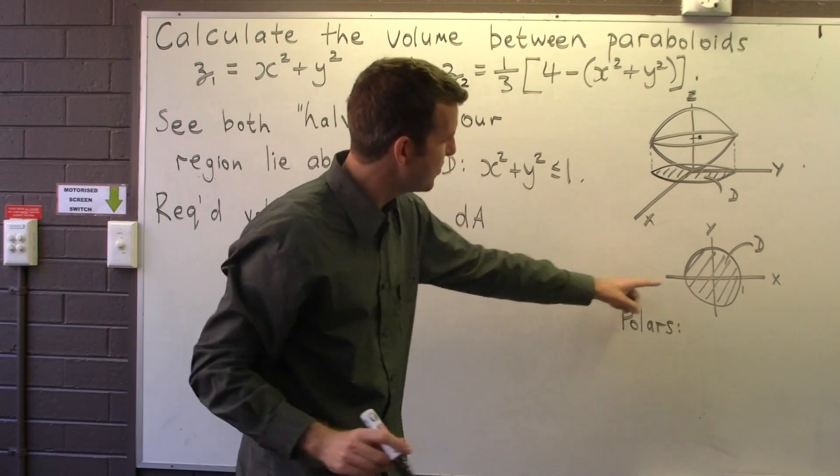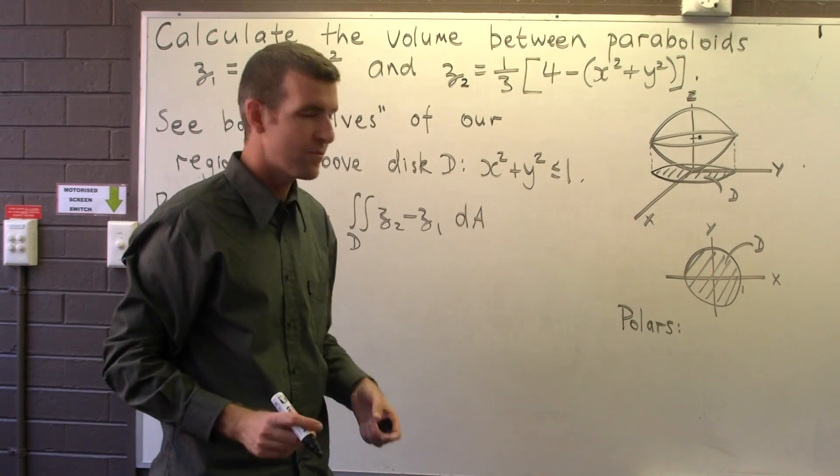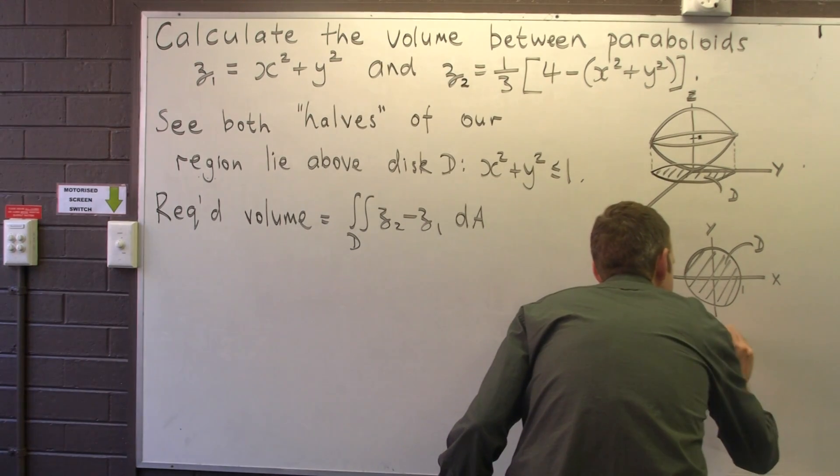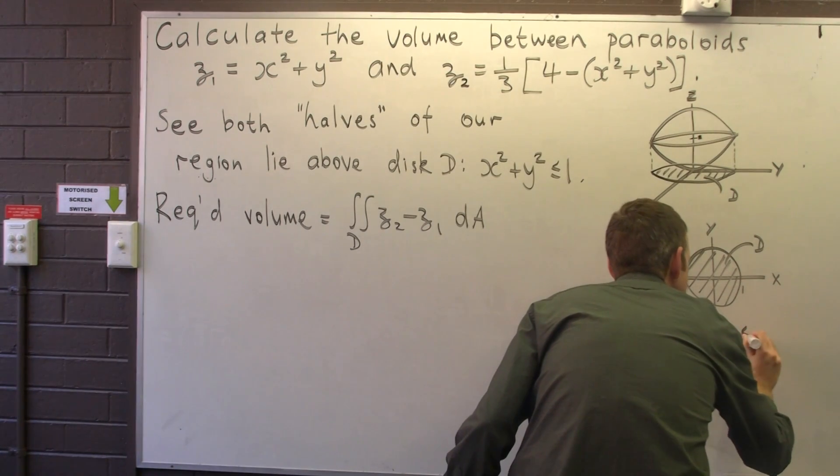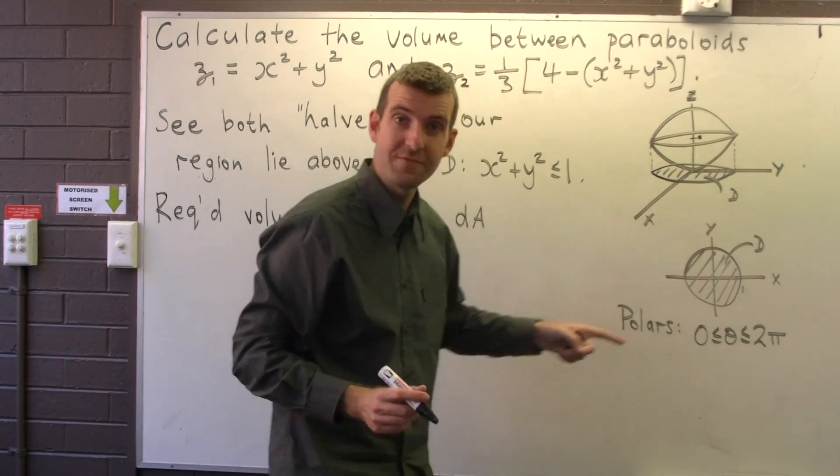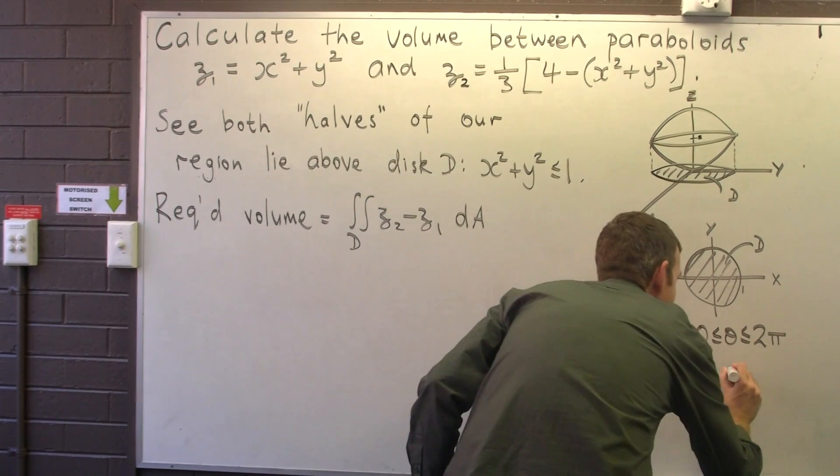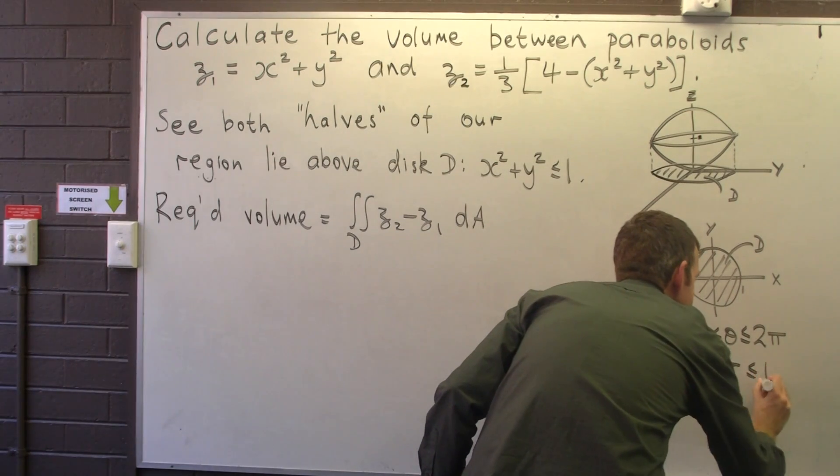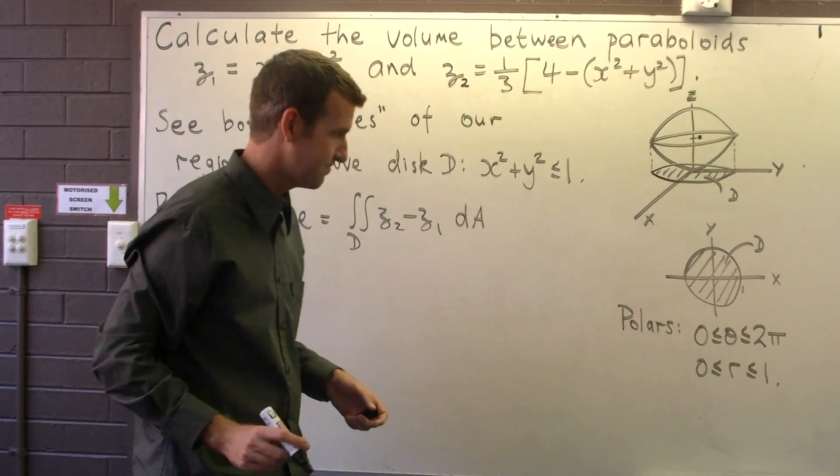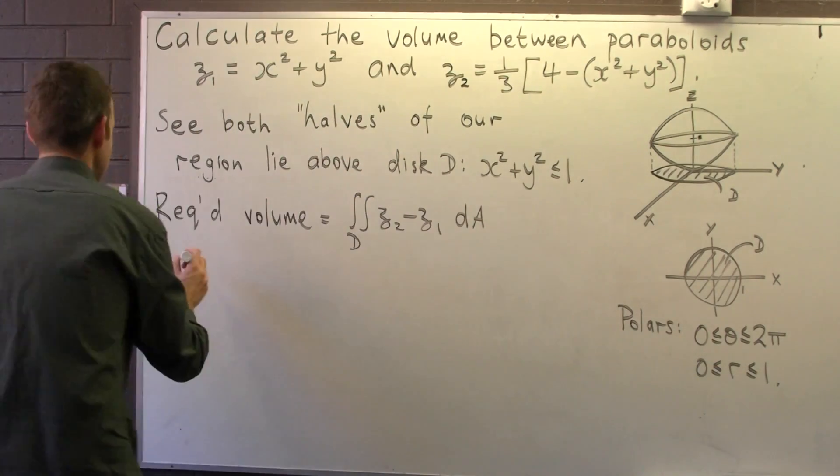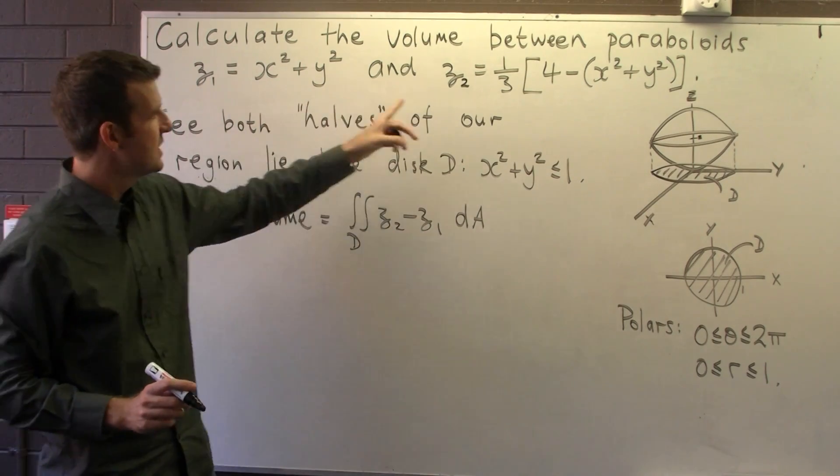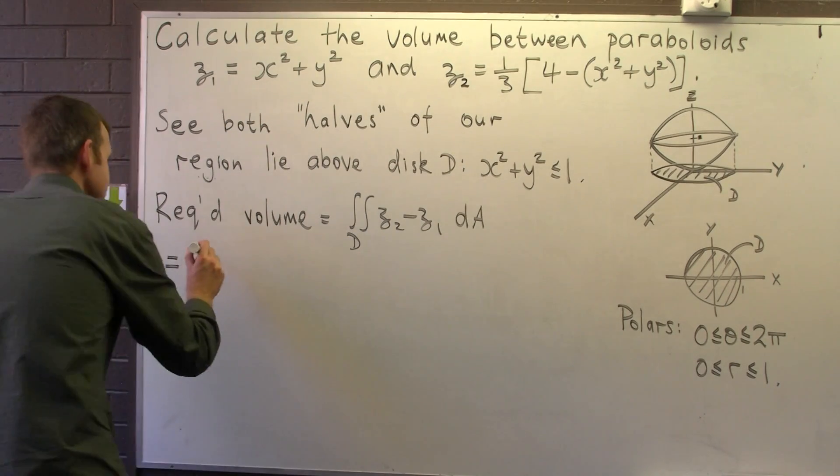The polar coordinates for our region D—remember polar coordinates involve a length and an angle. The angle is just going to be from 0 to 2π because it involves one full rotation, and the length is just going to be between 0 and 1. If we take z1 from z2 we actually get a nice simplification.